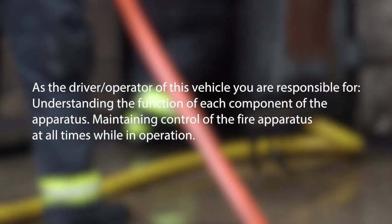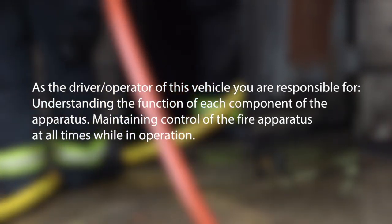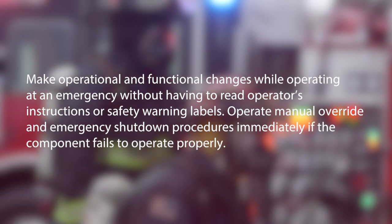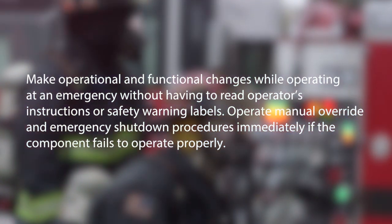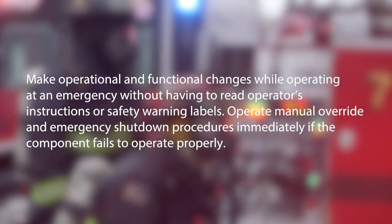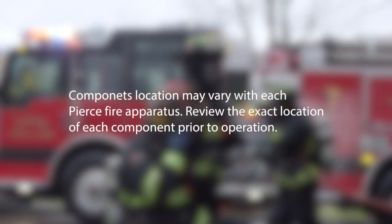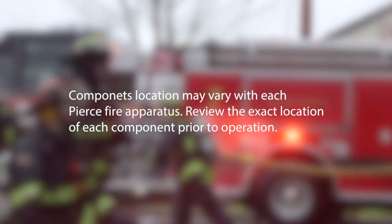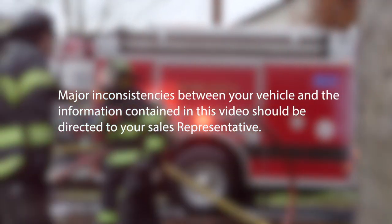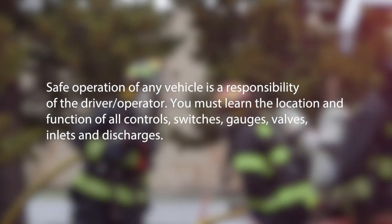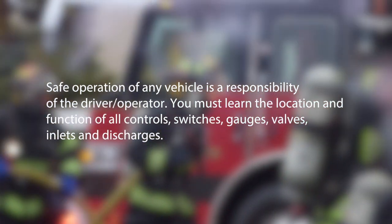As the driver operator of this vehicle, you are responsible for understanding the function of each component of the apparatus, maintaining control of the fire apparatus at all times while in operation, and making operational and functional changes while operating at an emergency without having to read operator's instructions or safety warning labels. You must also operate manual override and emergency shutdown procedures immediately if a component fails to operate properly. Component location may vary with each Pierce fire apparatus, so review the exact location of each component prior to operation. Safe operation of any vehicle is the responsibility of the driver operator. You must learn the location and function of all controls, switches, gauges, valves, inlets, and discharges.